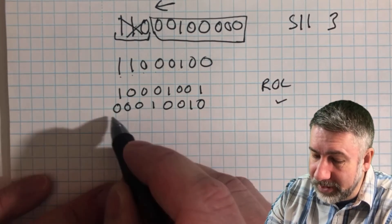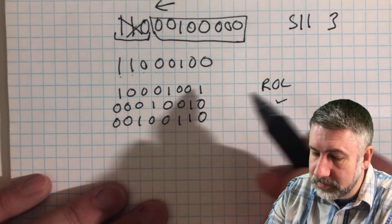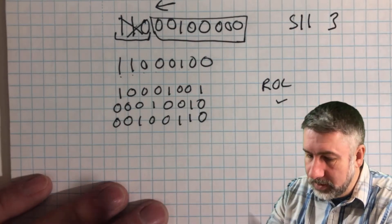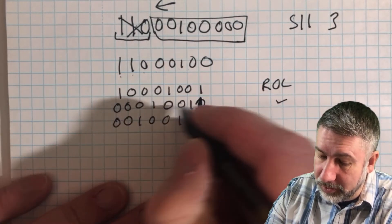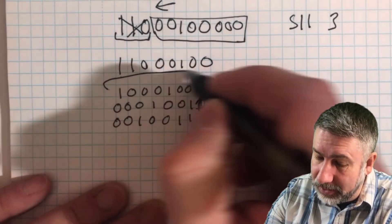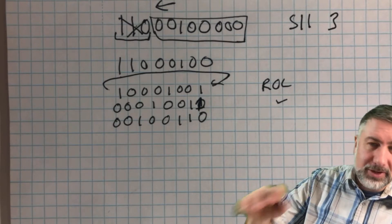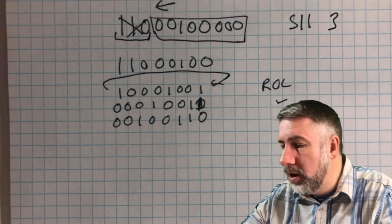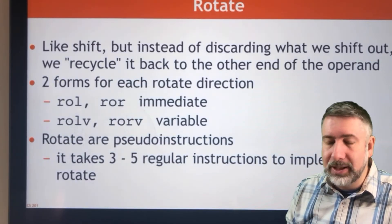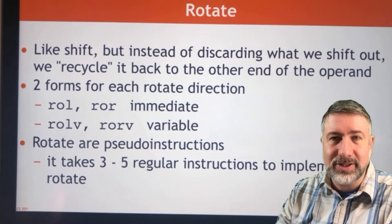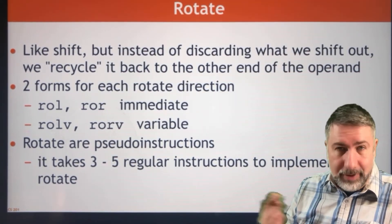And that's another rotate left, and then we're going to do that again. At each point in the rotation — and you can see why it's called rotate — we take the number that's at one end, put it on the other end, and we can do that in the left direction or the right direction. So instead of discarding, we recycle that number back into the other end of the operation.